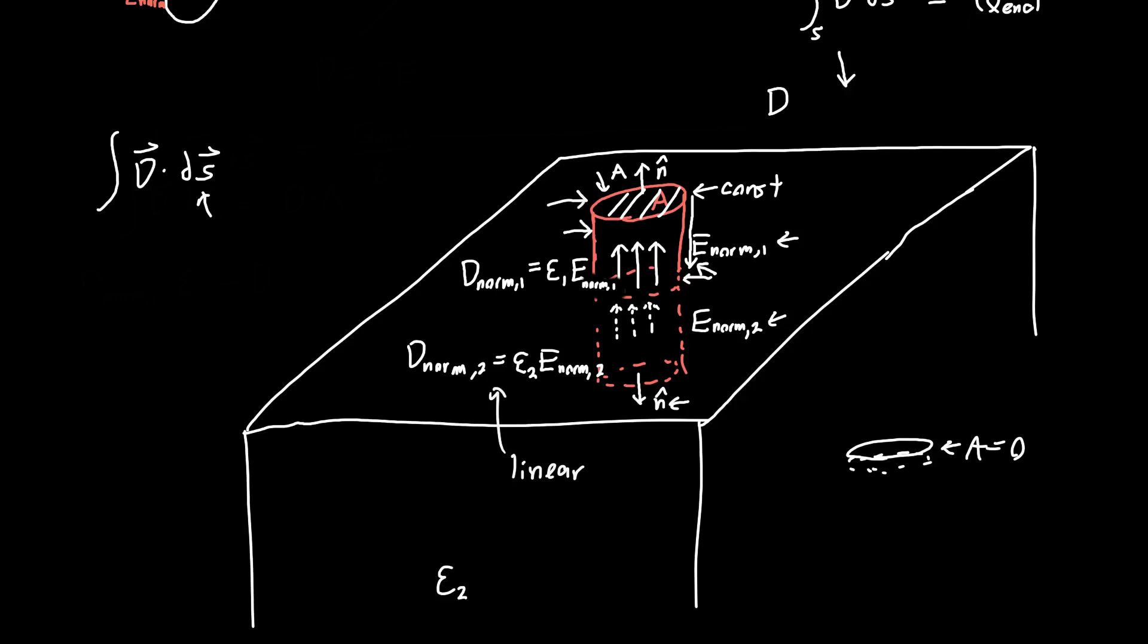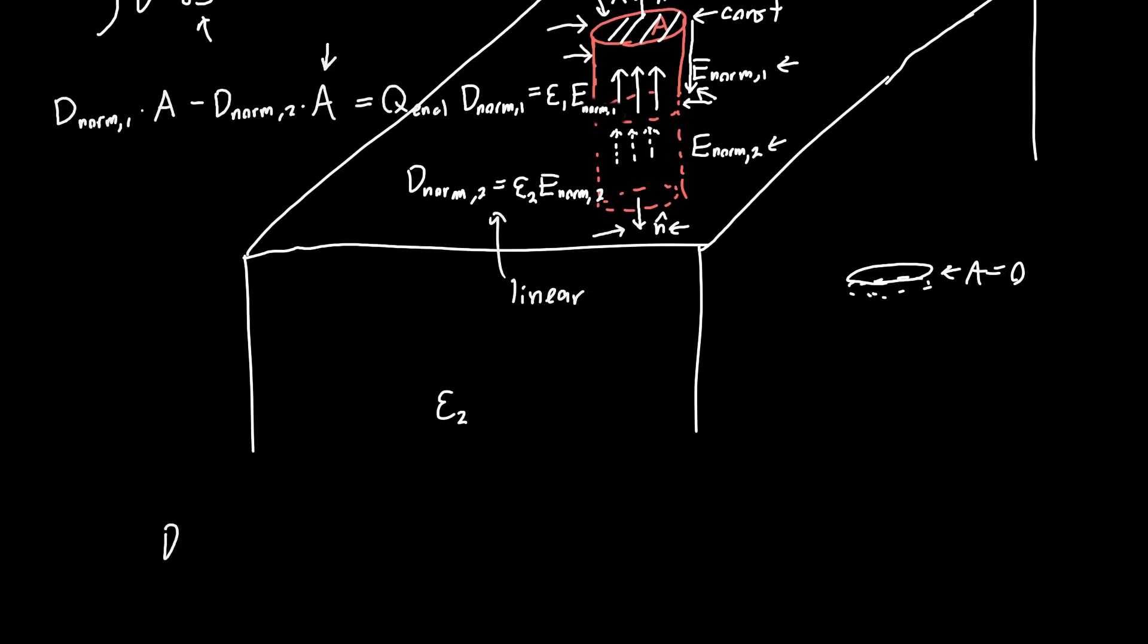First, on the top surface, we integrate over the area there, and since the electric field is constant, we just have D norm 1 times the area. Now, integrating over the bottom surface, where the normal vector is pointing in the opposite direction, I subtract D norm 2 times the area, and this should all be equal to the charge enclosed. Now, the only awkward part is this area sitting over here, so it's some arbitrary A, it doesn't really have any meaning. And so we're going to divide both sides by the area, and now we have the normal component of our electric displacement vector minus D norm 2 is equal to the enclosed charge divided by the area, and you might recognize this as just the surface charge density sigma. So this is the physically meaningful quantity when we're dealing with surface and charge distributed over that surface.